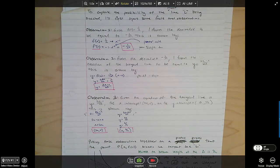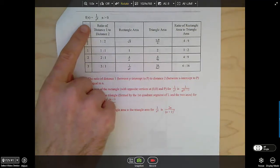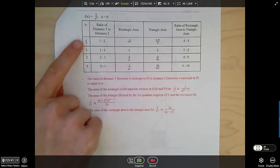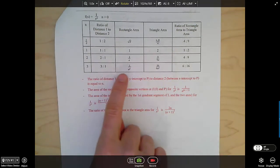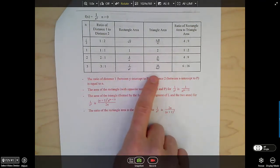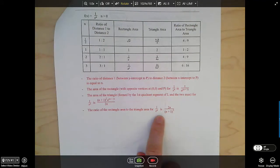This student has summarized a whole bunch of their observations in a table. Given the equation 1 over x to the n for different n values, these are the results that connect back to the work that they had on previous pages. Here's the ratio, here's the rectangle area, here's the triangle area.